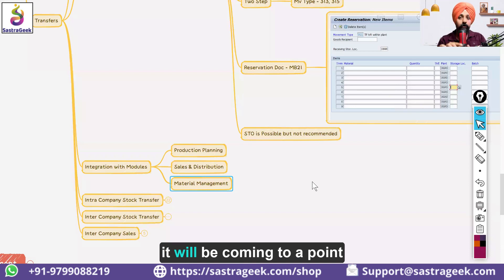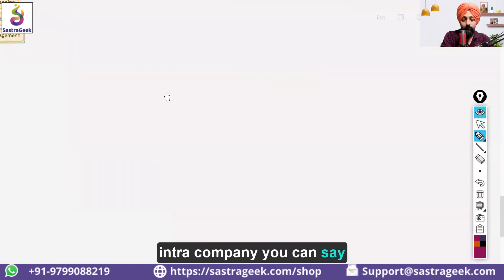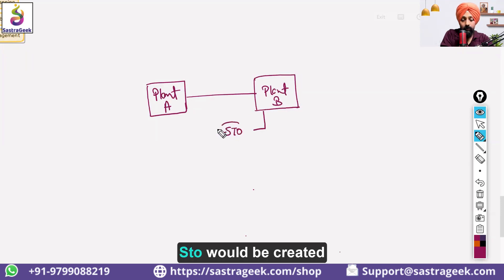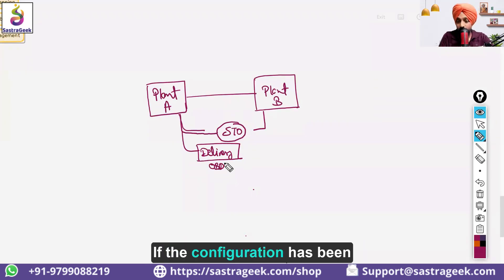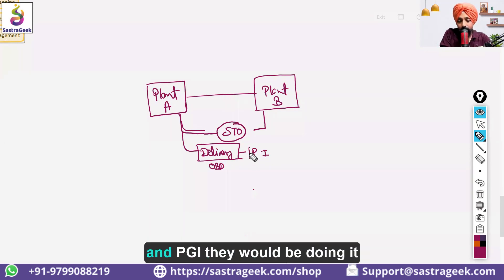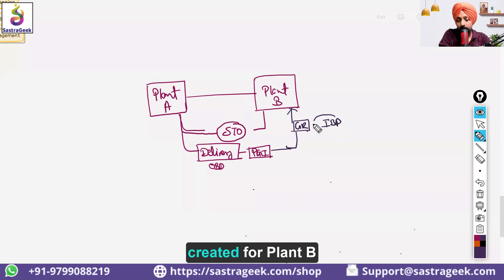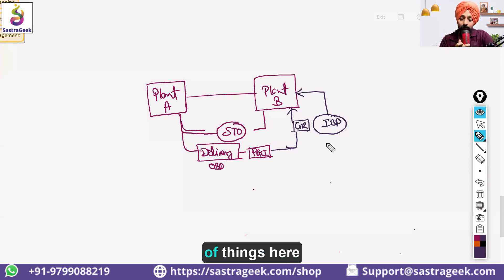Now moving to plant-to-plant movement — from plant A to plant B. Plant B creates a stock transfer order. Against this STO, plant A creates an outbound delivery and performs picking and PGI. Plant B then does a direct goods receipt, or if an inbound delivery process is configured, an inbound delivery is created and plant B does the goods receipt based on that inbound delivery.